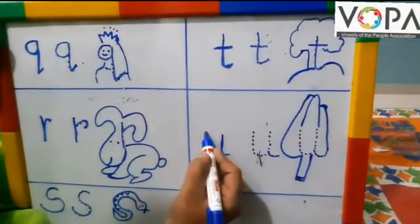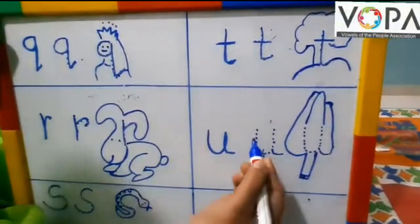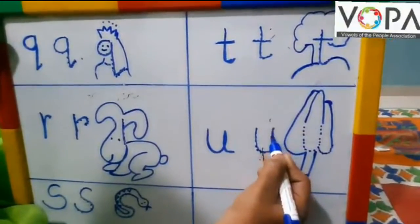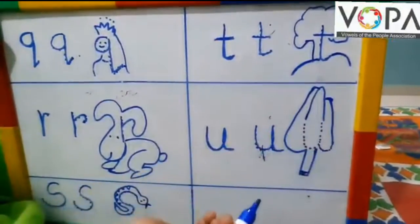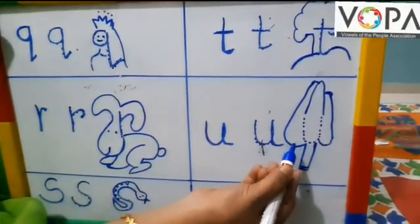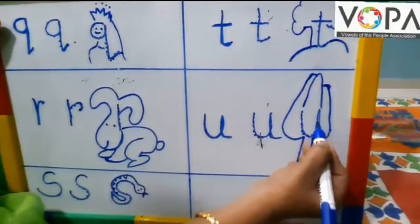This is letter U. This is how you write U. Let us see. U. You can also draw Umbrella with letter U. U for Umbrella.